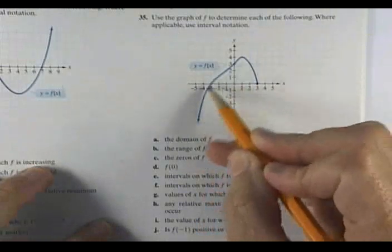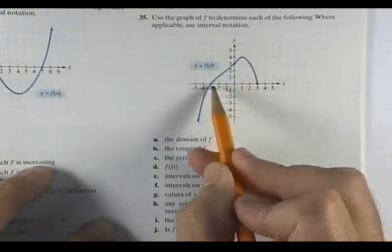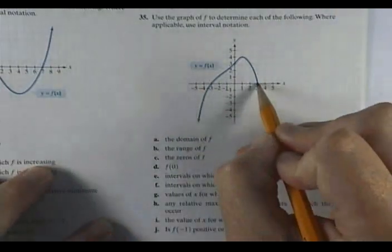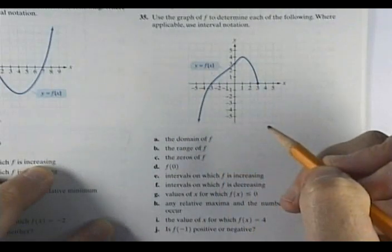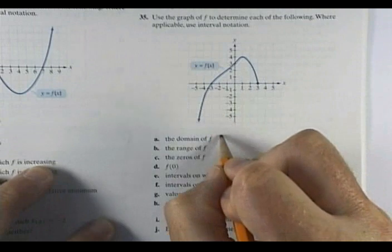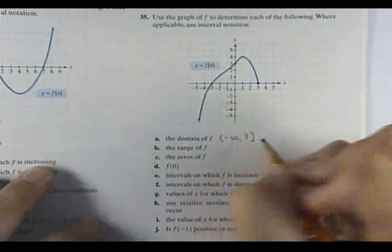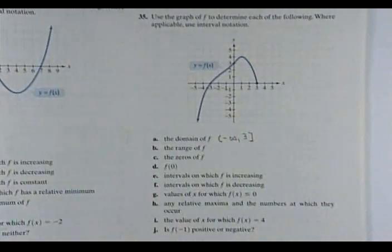What is the domain here? This arrow here means that this graph is going to keep going down here forever. So I'm going to use all the x's back here on it. But where is my graph stopping at where x equals what? Three. So my domain here would have to be negative infinity to three with a bracket. Does everybody agree there?